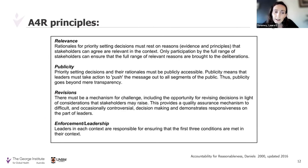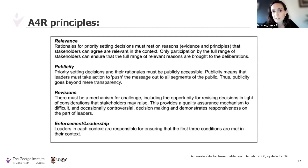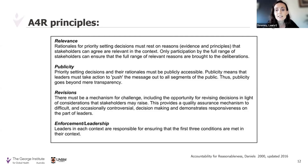This framework has three key principles and one overarching principle that supports them. The first is relevance — the rationale for priority setting decisions must rest on reasons that stakeholders can agree are relevant in the context. The second is publicity — priority setting decisions and their rationales must be publicly accessible. The third is revisions — there must be a mechanism for challenge, including the opportunity for revising decisions in light of stakeholder considerations that may arise. Finally, enforcement and leadership dictates that leaders in each context are responsible for ensuring that the first three conditions of relevance, publicity, and revisions are met.